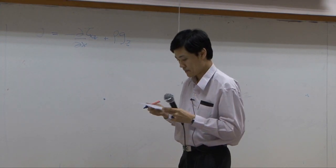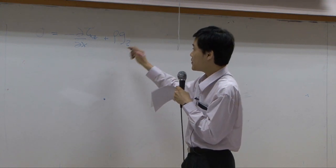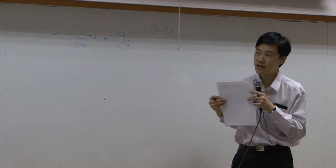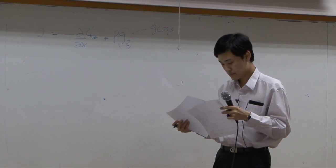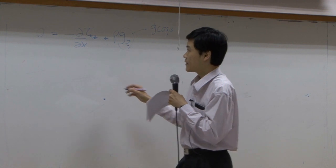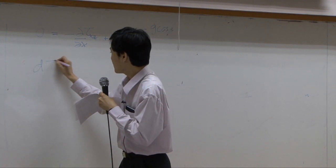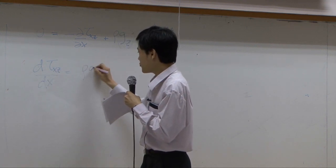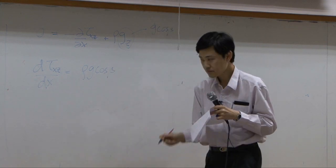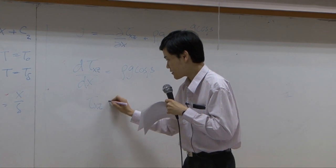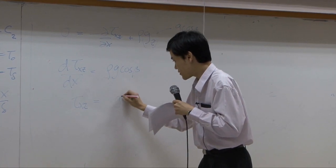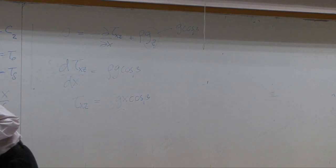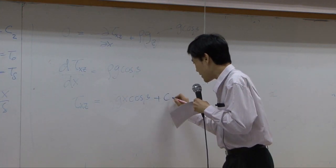Here, g_c is g·cos(β), where β is the angle of the inclined plane. Converting this, you get the total differential of tau with respect to x equal to ρ·g·cos(β). Integrating, you get τ_xz equal to ρ·g·cos(β)·x plus another constant C₂.